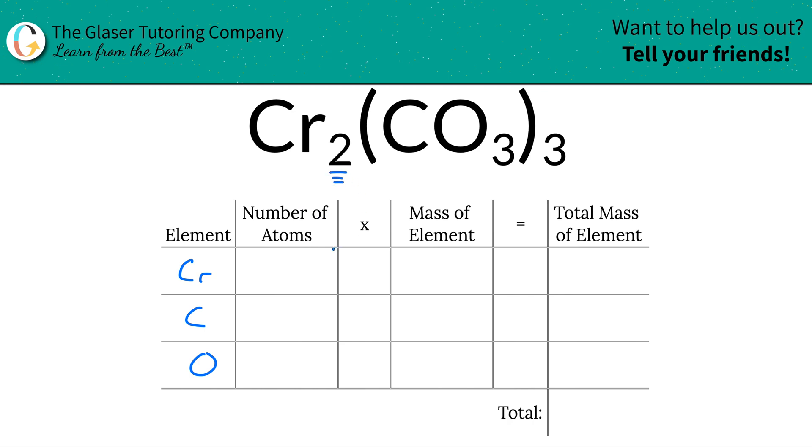At the bottom of chromium there's two, that means there are two atoms of chromium. Then carbon - there's one carbon inside of carbonate but you have three carbonates, so therefore there's a total of three carbons. In other words, take the subscript of carbon and multiply.